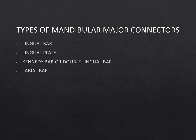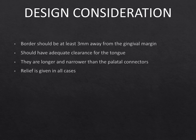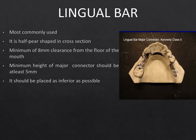Mandibular major connectors are typically: a lingual bar, a lingual plate, a double lingual bar, and a labial bar. Design considerations: the superior border should be 3 mm away from the gingival margin; adequate clearance for the tongue should be provided; they should be longer and narrower than palatal connectors; relief is given in all cases. The lingual bar's margin should be at least 3 mm from the gingival margin. In severely resorbed ridges or patients with a shallow floor of the mouth, a minimum of 8 mm clearance should be provided from the floor of the mouth — 6 mm for sulcus depth and 3 mm superiorly — with at least 5 mm height/cross-section for rigidity.